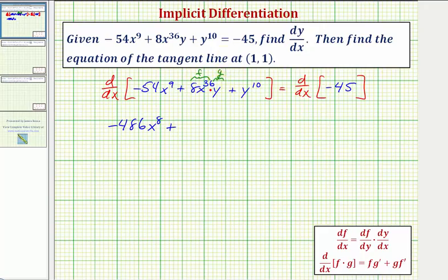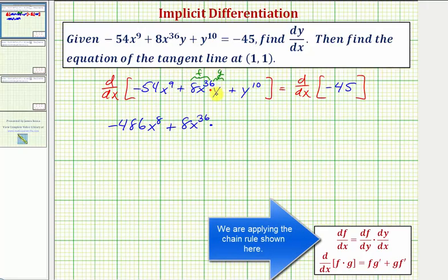Applying the product rule, we have the first function as it is — 8x³⁶ — times the derivative of y with respect to x. Because this is a y term, we apply the chain rule: the derivative of y with respect to y is 1, times the extra factor dy/dx, which just gives us dy/dx.